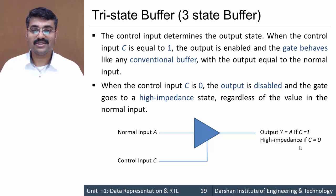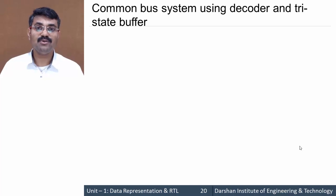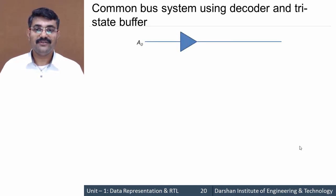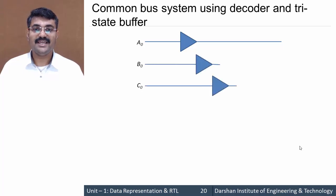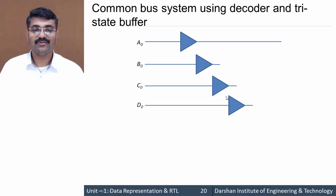In summary: output Y equals input A if C equals one, and it is in high impedance state if C equals zero. This is a tri-state buffer. The application of tri-state buffer is in designing a common bus system. For example, we take four registers A, B, C, D and take individual bits — A0, B0, C0, and D0 — from those four registers as inputs to the buffer gates, getting normal output from all buffer gates.